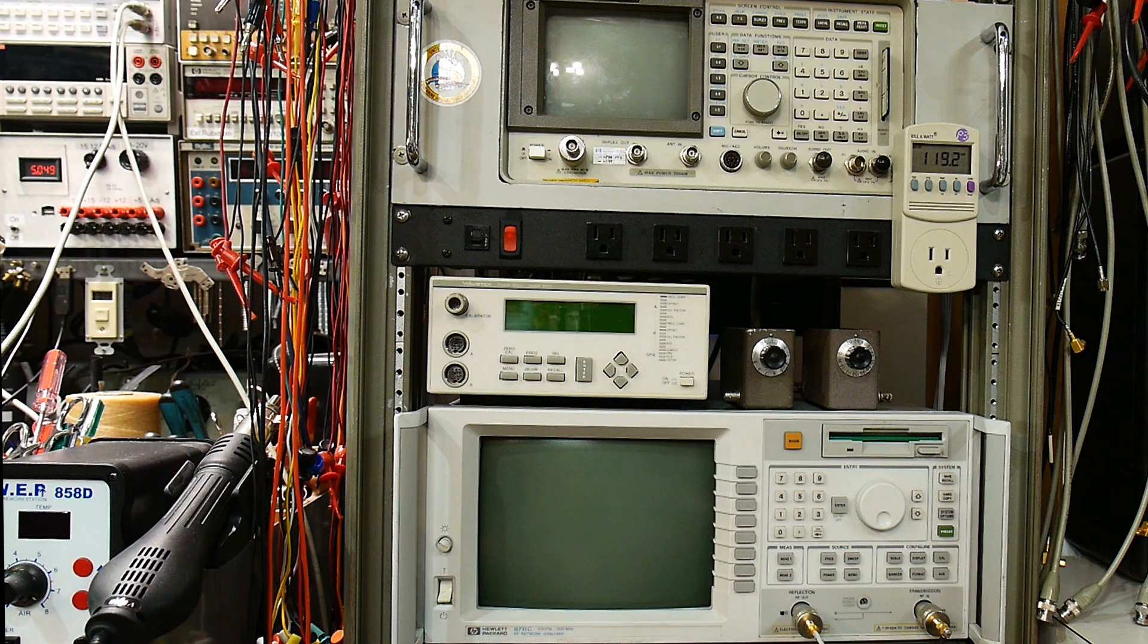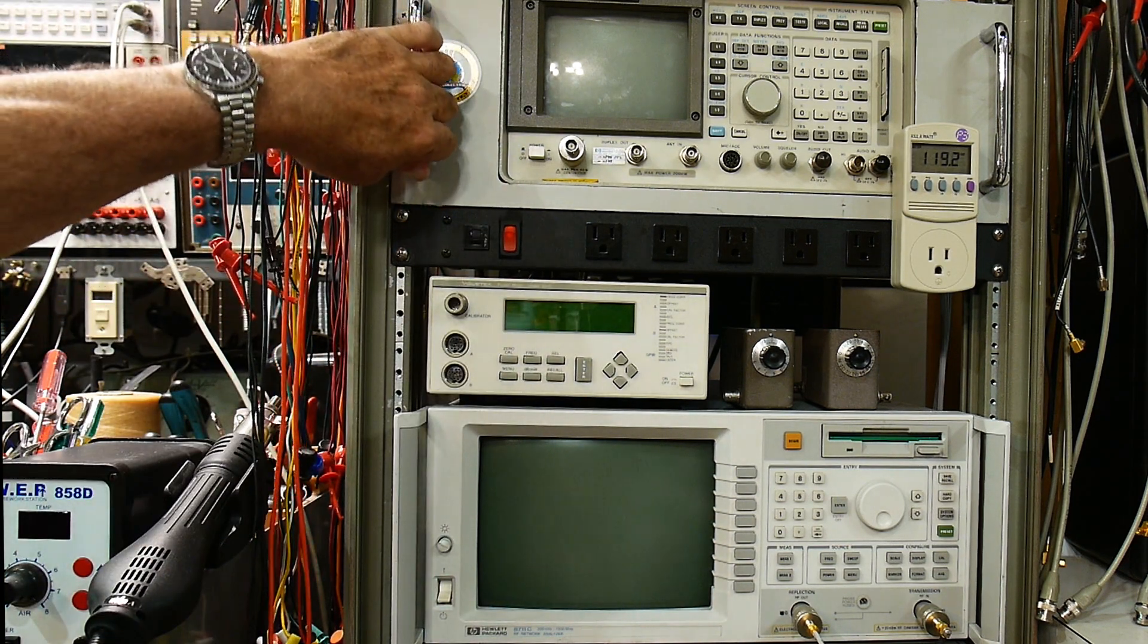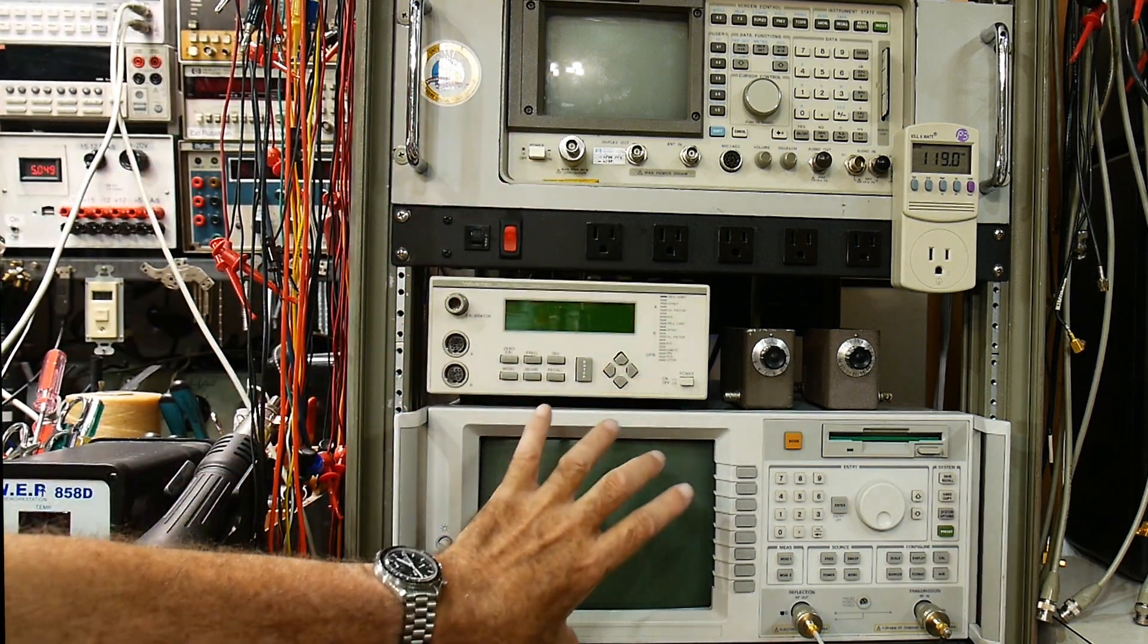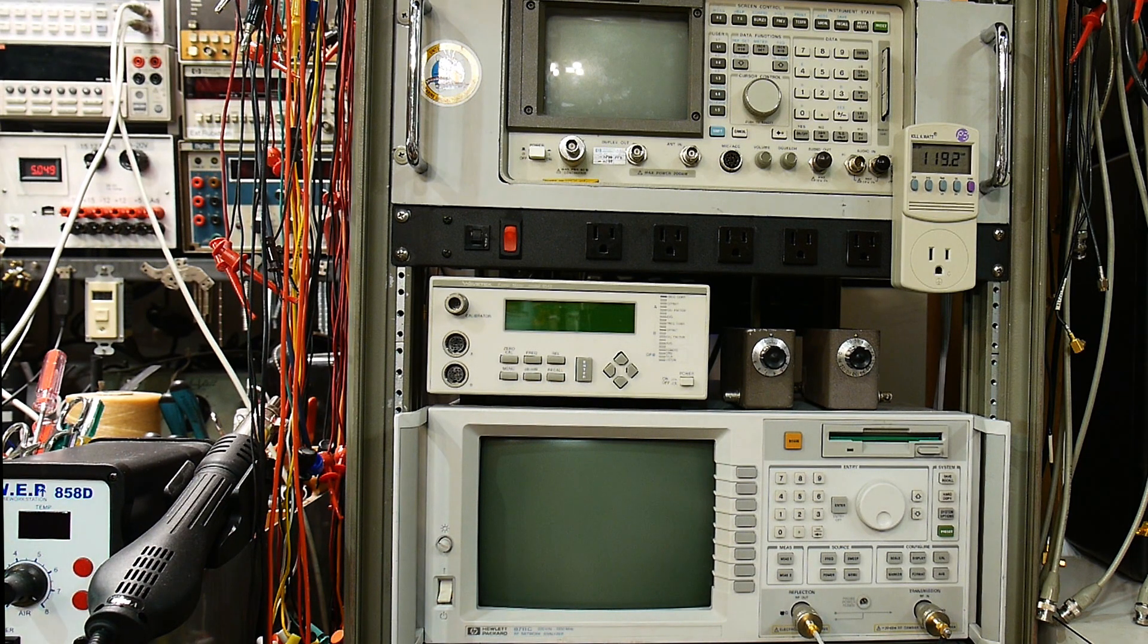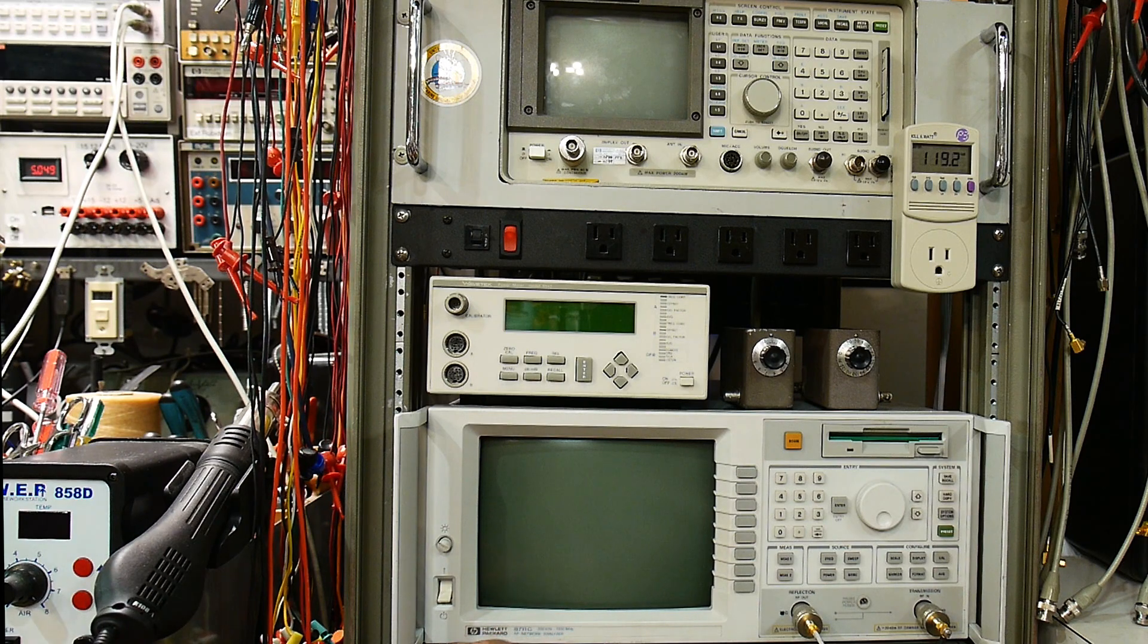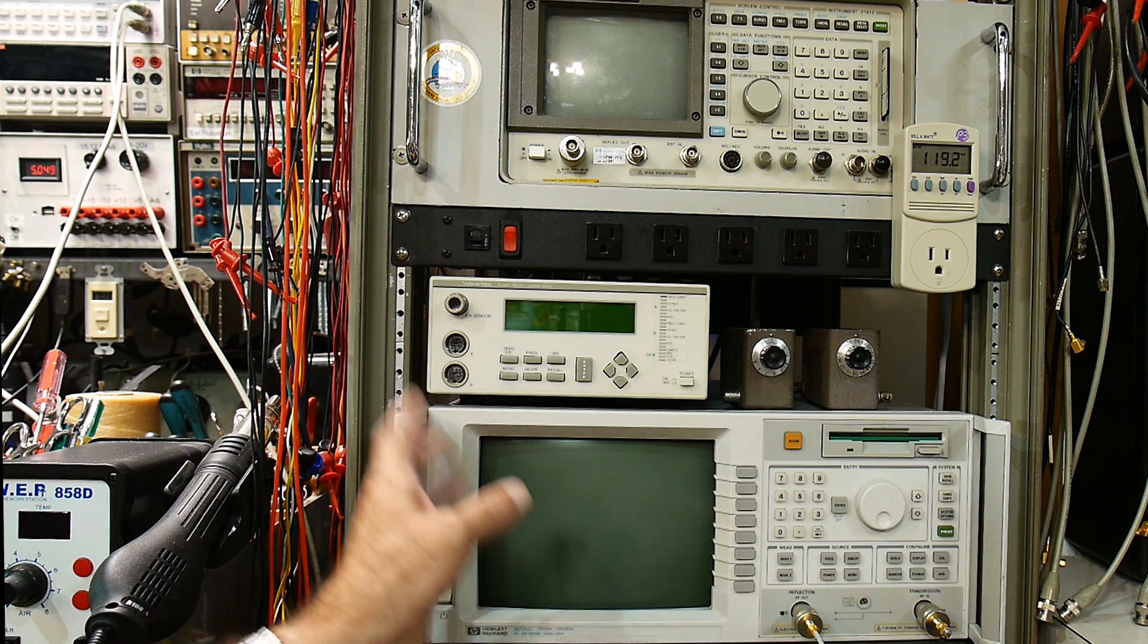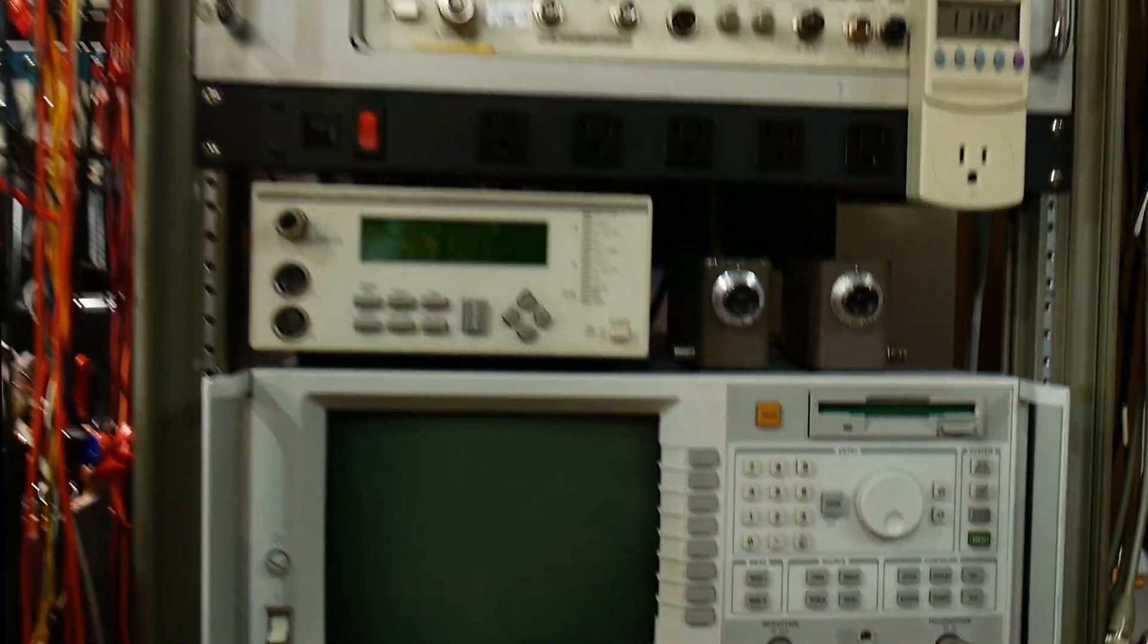So here it is, I've moved it into my rack. This is my 8921 radio test set and this is my new 8712C vector network analyzer. It started out life as an 8711C which was a scalar network analyzer. I hacked it into a VNA. I'll link some videos below on how to hack this thing. So yeah let's turn it on and take a look.